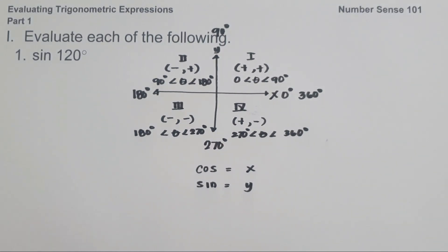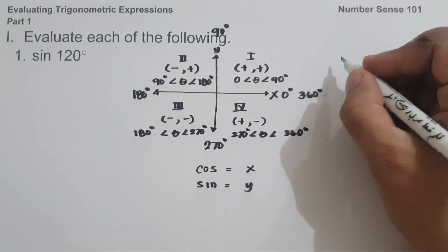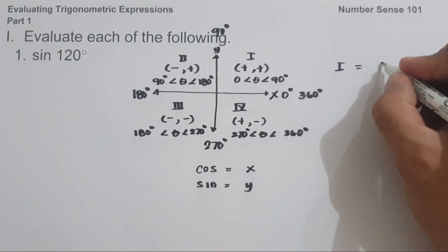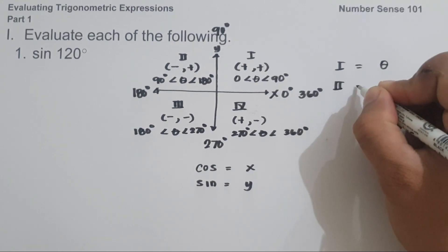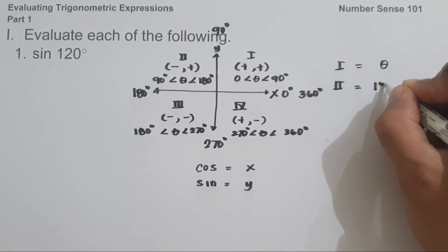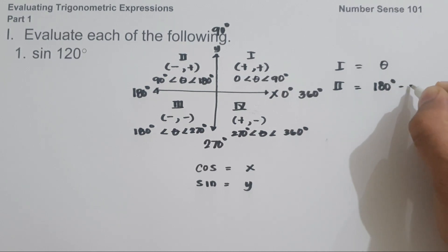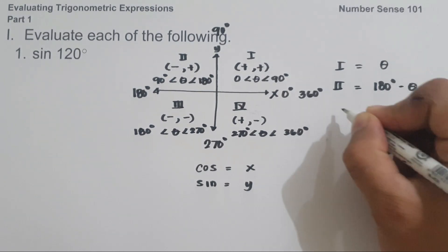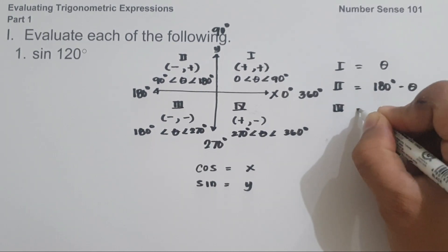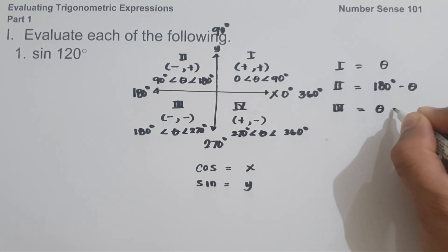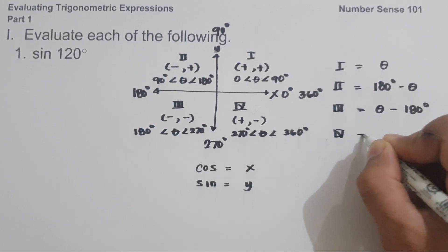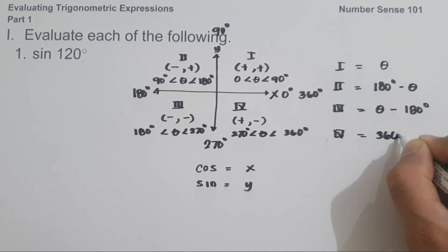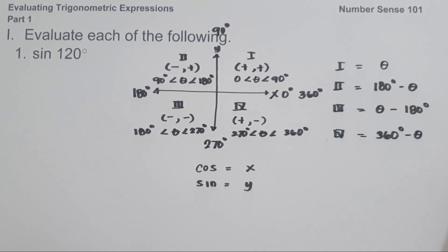There are four formulas that you need to remember for the reference angle in each quadrant. In quadrant 1, the formula is the given angle theta. In quadrant 2, that is 180 degrees minus theta. In quadrant 3, that is theta minus 180 degrees. And in quadrant 4, that is 360 degrees minus theta.